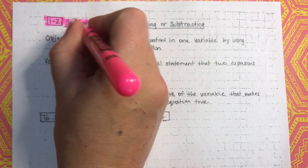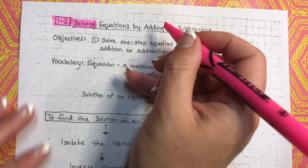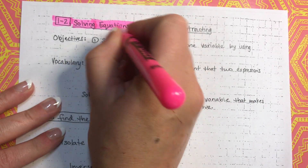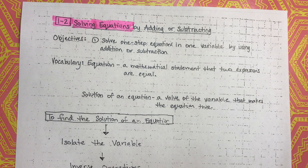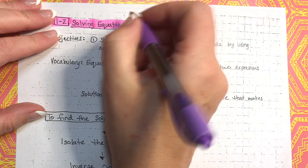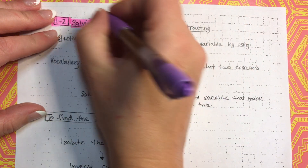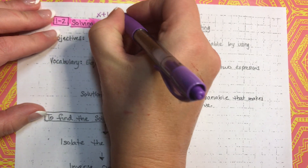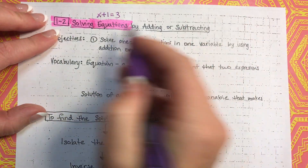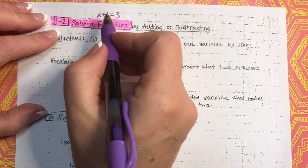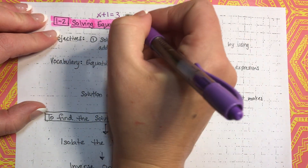Solving — that always means to try to find the answer. Equations — we talked about this last time. Equations are something that have an equal sign. So, x plus 1 equals 3 has an equal sign, so that is an equation. This is an algebraic equation.